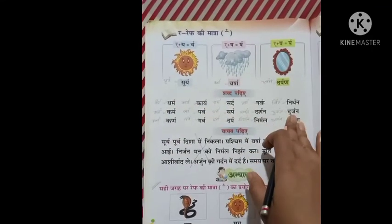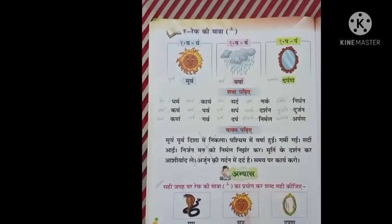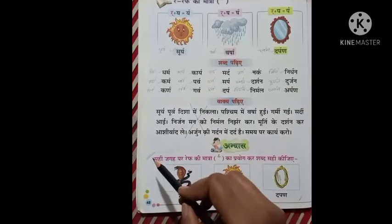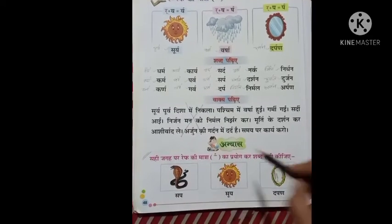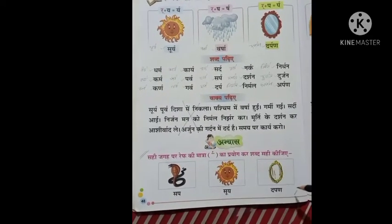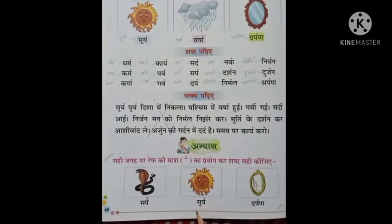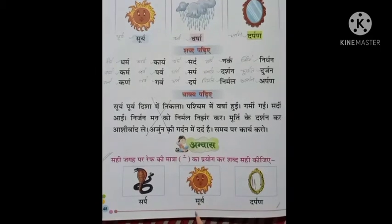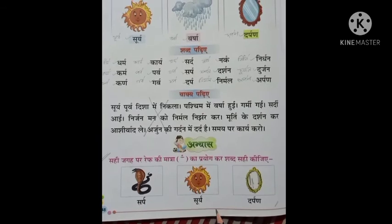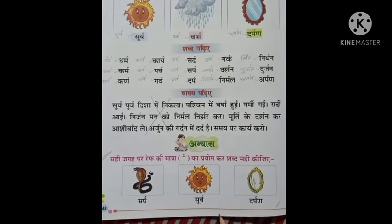Read this very carefully and cross this. This is your homework. Do this homework in your book. I have done the answers. Now, read these answers. Follow this and do it in your book.